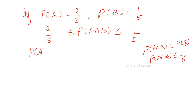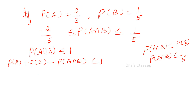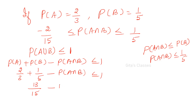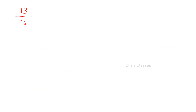Now to prove P(A∩B) ≥ −2/15: we know that P(A∪B) ≤ 1. By the addition theorem, P(A) + P(B) − P(A∩B) ≤ 1. Substituting: 2/3 + 1/5 − P(A∩B) ≤ 1. Taking LCM as 15, this gives 13/15 − P(A∩B) ≤ 1.